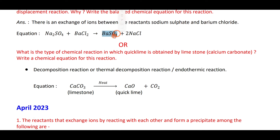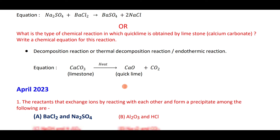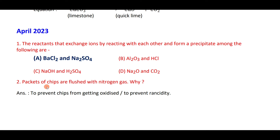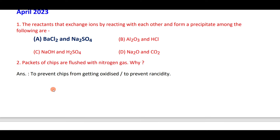Quick lime is obtained by the thermal decomposition of limestone: CaCO₃ on heating gives CaO plus CO₂. The reactants that exchange ions to form a precipitate among the following are barium chloride and sodium sulfate. Packs of chips are flushed with nitrogen gas to prevent rancidity or to prevent chips from getting oxidized.